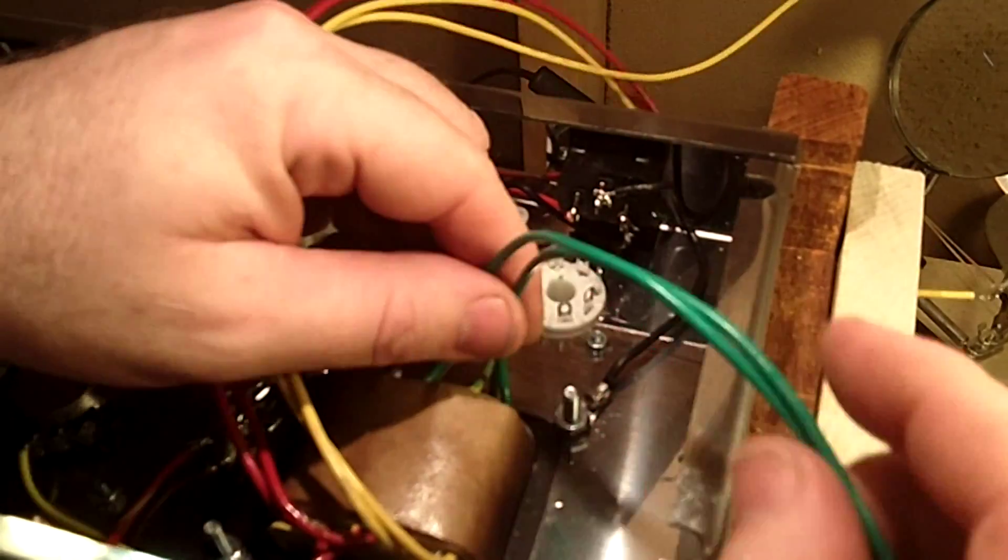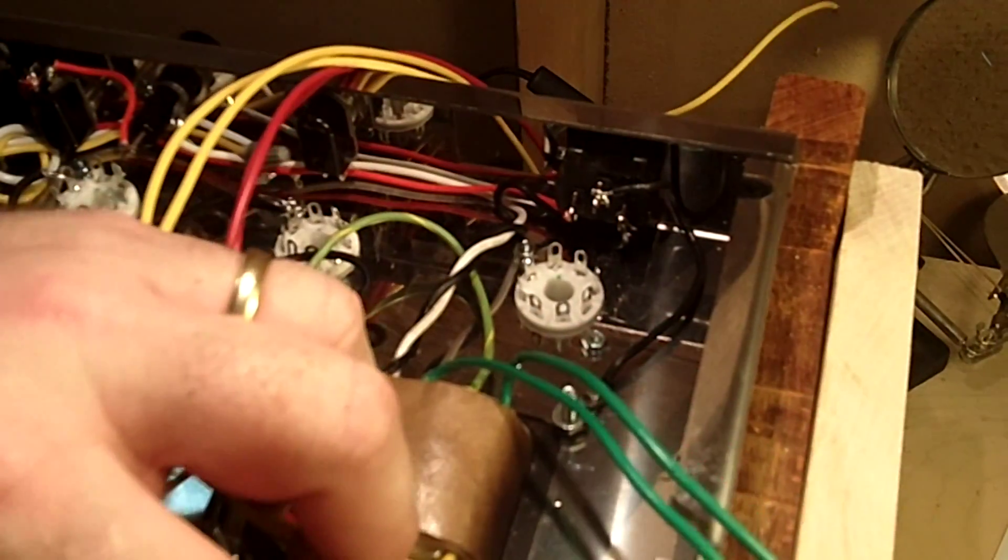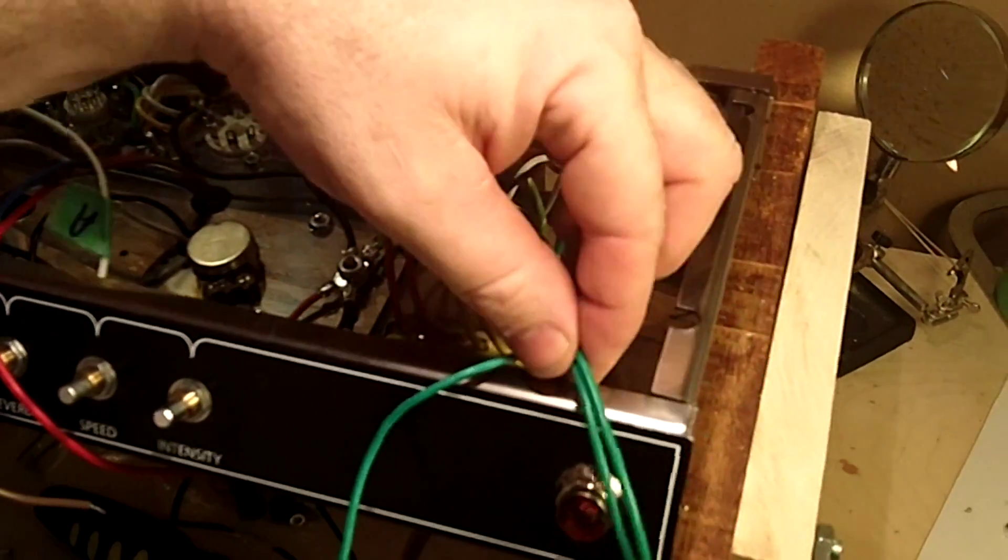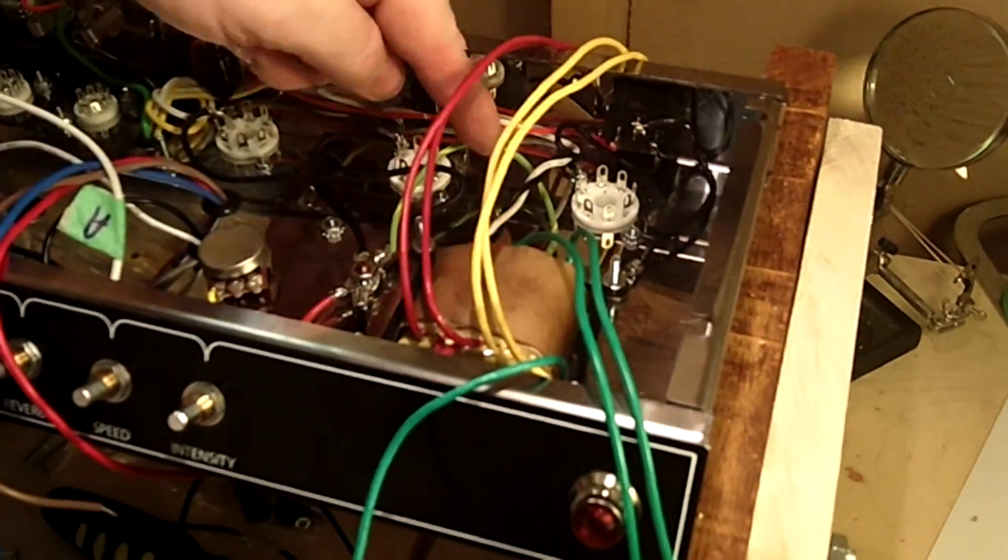And then we've got our green low voltage secondaries that go to the pilot light. Recall those from where we did the filament wires.